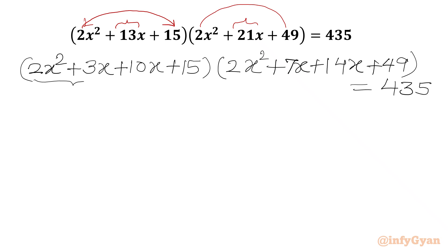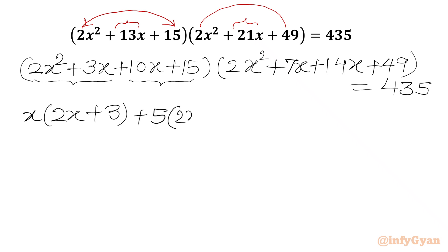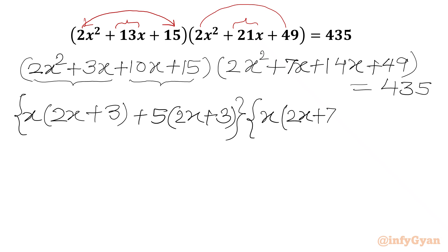Now we can take x common from here, 5 common from here. So I will write x is common, in the bracket 2x plus 3, and 5 is common, then in the bracket we will get 2x plus 3 again. From the first two terms here I will take x common, so in the bracket 2x plus 7. From the last two terms, 7 is common, in the bracket 2x plus 7. RHS is 435.